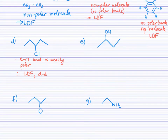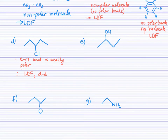For the 3-chloropentane molecule, in addition to carbon-carbon and carbon-hydrogen bonds, there is now a carbon-chlorine bond. That C-Cl bond is very weakly polar, which introduces subtle dipole-dipole attractions. So this molecule experiences both London dispersion forces and dipole-dipole attractions.